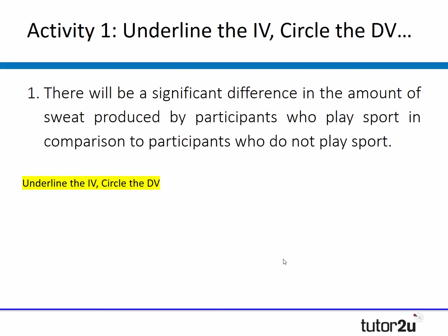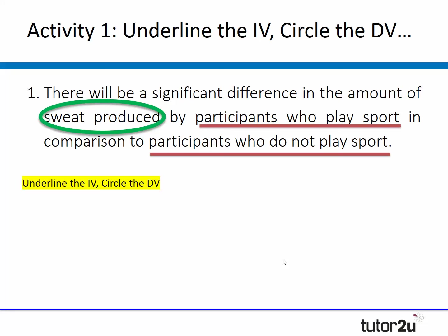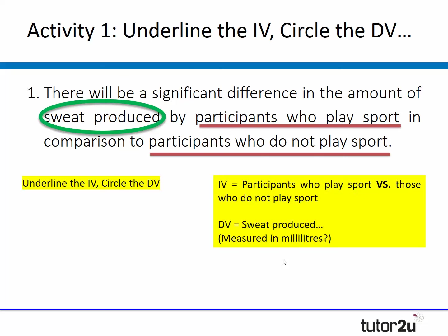For example, one hypothesis reads: there will be a significant difference in the amount of sweat produced by participants who play sport in comparison to participants who do not play sport. Following the rule: circle the dependent variable (sweat produced), underline the IV (participants who play sport vs. those who don't). Students will start to see that the IV is always broken into at least two different groups. The DV needs to be operationalised — perhaps millilitres of sweat — so different amounts from different people can be compared.